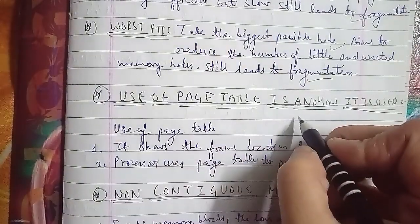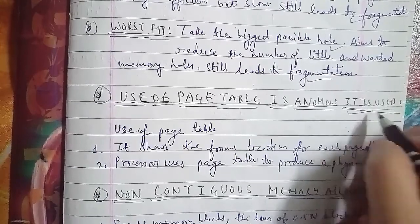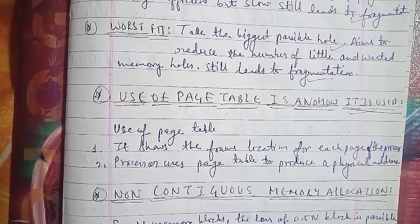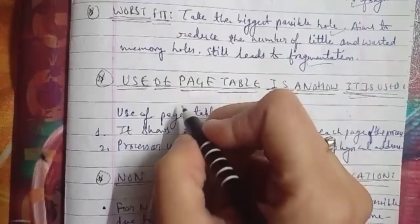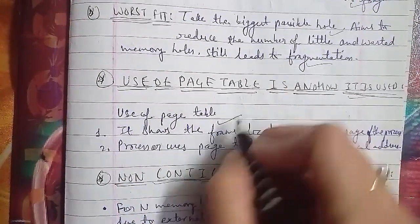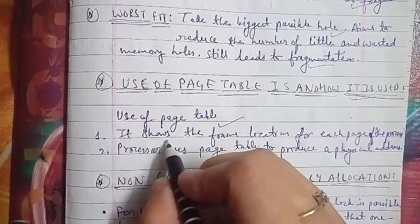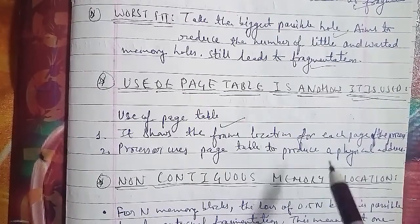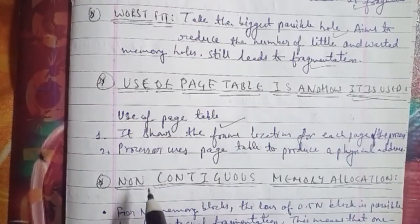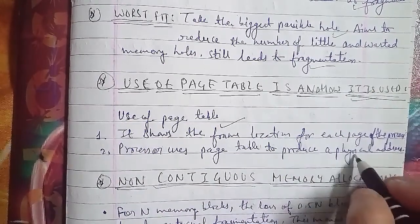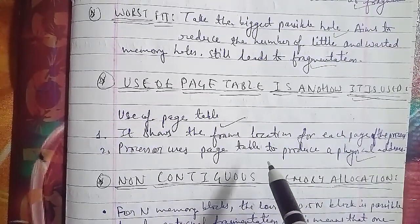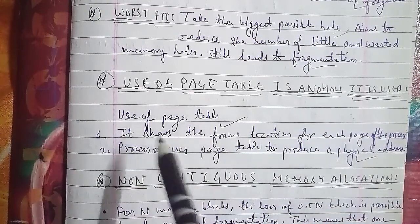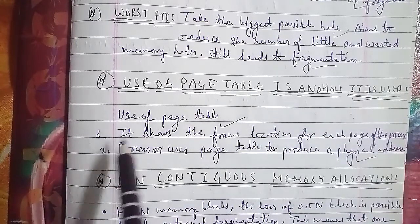Users of page table: there are two uses. First, it shows the frame location for each page of the process. Second, it is used by the processor to produce a physical address.